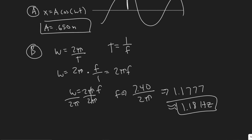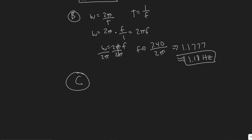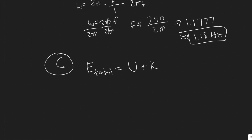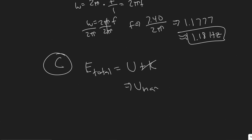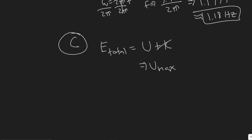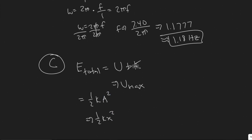For part C, we need the total energy stored in the spring. The total energy equals the maximum potential energy, because at maximum displacement kinetic energy is zero — the mass is momentarily at rest. So E_total equals U_max, which has the formula one-half k·A squared. We use A (the amplitude) because that's the maximum displacement, which is where all energy is potential.